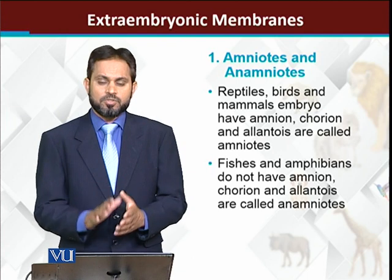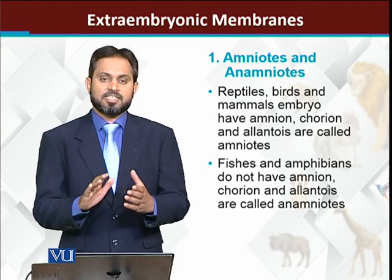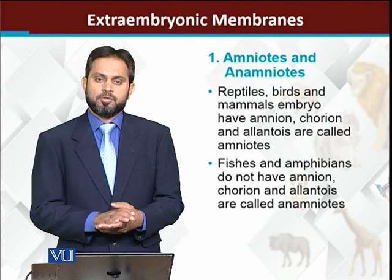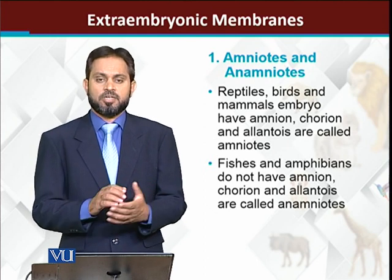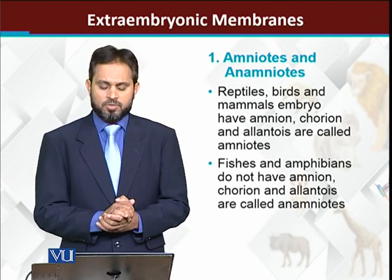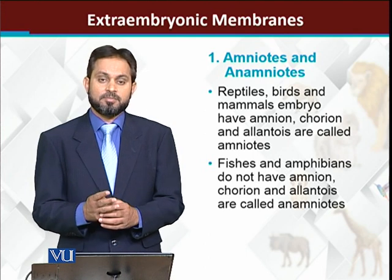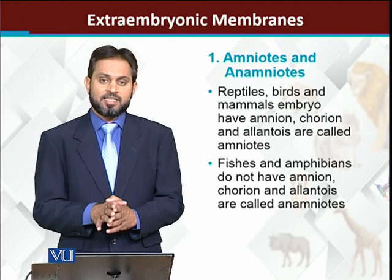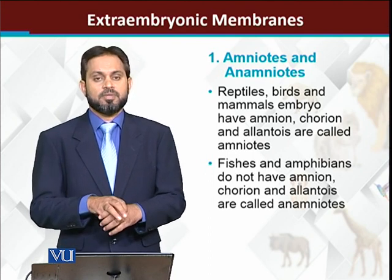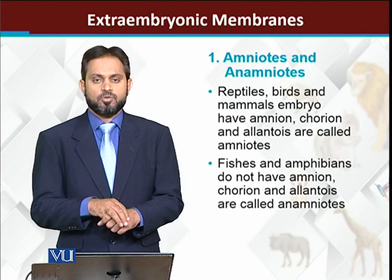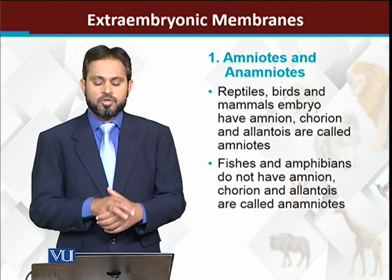Amniotes are those animals which have extra embryonic membranes. The extra embryonic membranes present in amniotes are: amnion, chorion, allantois - these are the three main extra embryonic membranes, and additionally the yolk sac is also present. The animals in this group are reptiles, birds, and mammals - these three vertebrate groups have extra embryonic membranes. Whereas amphibians and fishes do not have extra embryonic membranes during the developmental process, so amphibians and fishes are called anamniotes - meaning without extra embryonic membranes.